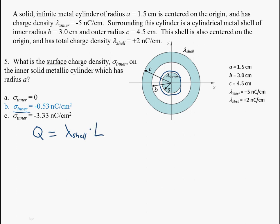That would be my total charge. Now to get sigma, it's going to be equal to Q over A, so that's just going to be lambda shell times L divided by A.